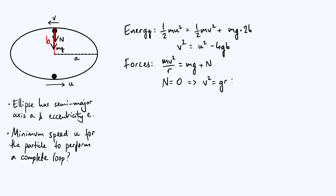At this point I'll quote a result about ellipses: at the top of the ellipse the radius of curvature r is given by a²/b, where a is the semi-major axis and b is the semi-minor axis. If you're interested in where that comes from, I suggest consulting Wikipedia's page on radius of curvature. Note that a²/b is a large number because a is bigger than b — the ellipse is least strongly curved at the top, so the approximating circle has a large radius.